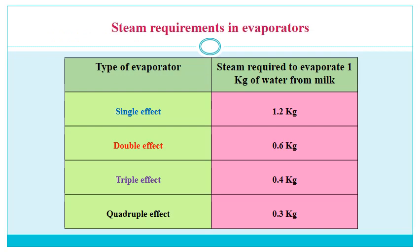Here is a comparison of steam required per type of evaporator to evaporate 1 kg of water from milk. The single effect needs 1.2 kg of steam; the double effect needs 0.6 kg; the triple effect needs 0.4 kg; and the quadruple effect needs 0.3 kg of steam to remove 1 kg of water from milk. This gives an idea of the efficiency of different kinds of evaporators.